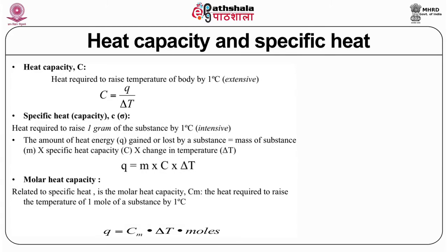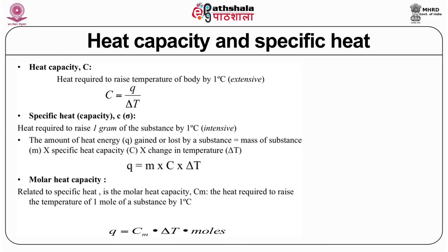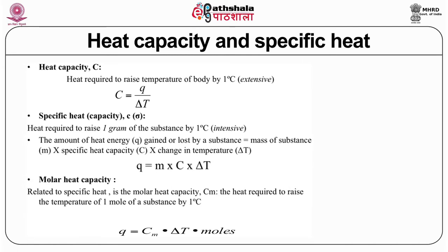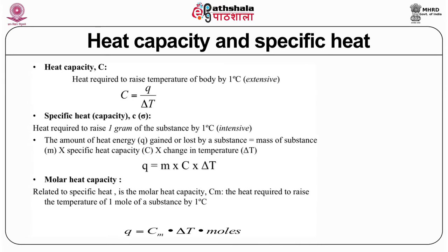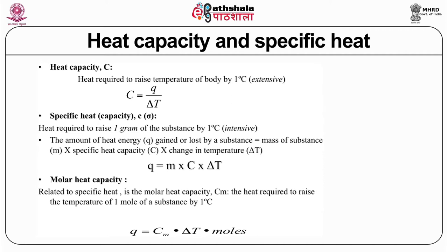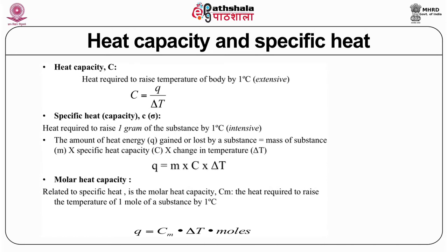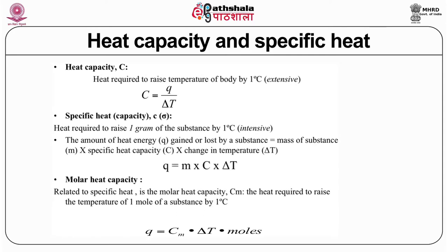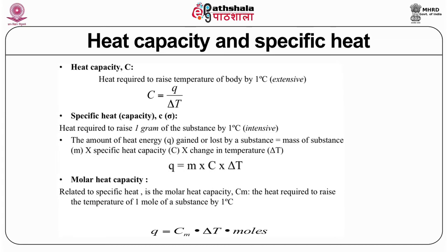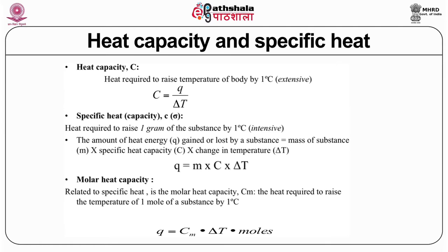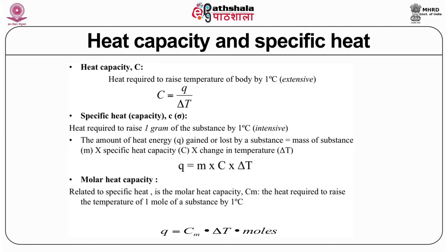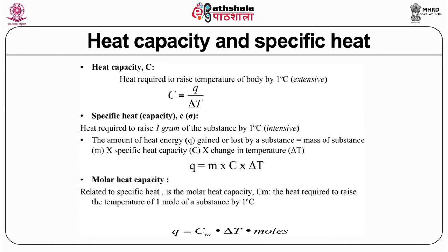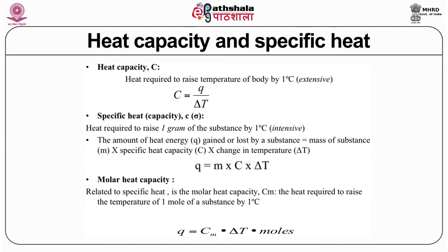Heat capacity and specific heat are two terms that continuously come up in thermodynamics. Heat capacity is the heat required to raise the temperature of a body by 1 degree centigrade — it is an extensive property, C equals Q divided by delta T. Specific heat, represented by sigma, is the heat required to raise 1 gram of a substance by 1 degree centigrade. This is an intensive property because you are specifying the amount of energy per gram: Q equals mass times C times delta T.